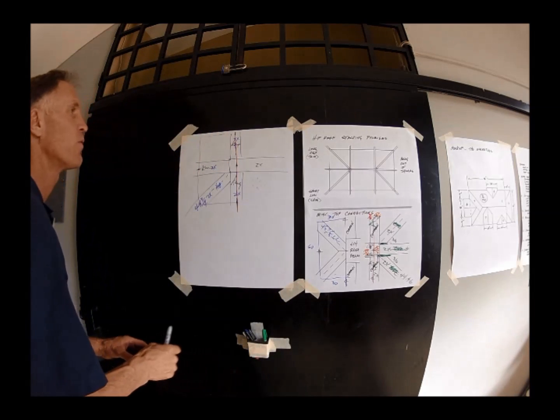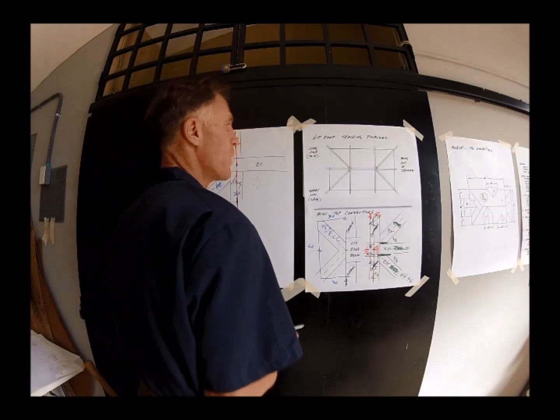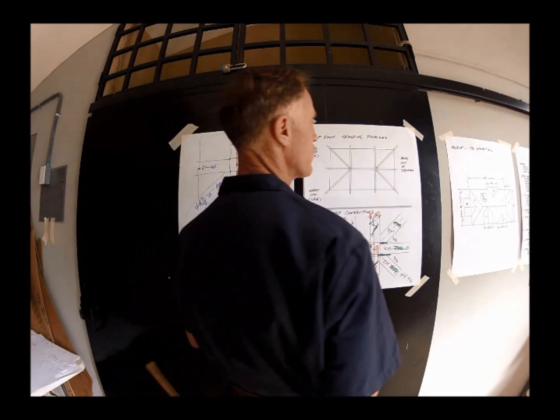Let's go ahead and talk about hip roof stacking problems. The biggest one obviously is building out of square.